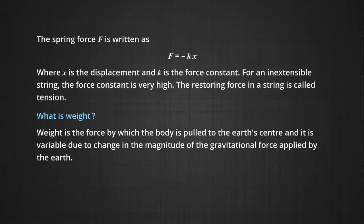Now we come to weight and how it is different from mass. Weight is the force by which the body is pulled to the earth's center and it is variable due to change in the magnitude of gravitational force applied by the earth. Now we shall see how weight is different from mass of the body. As this question makes us confused many times: what is mass and what is weight? In common practice, we say that my weight is 55 kg. Do you think it is right?